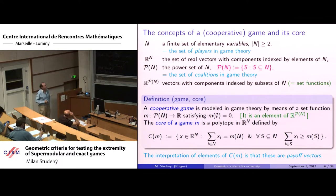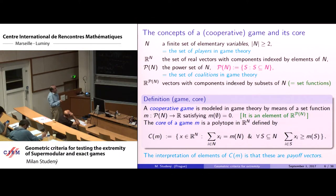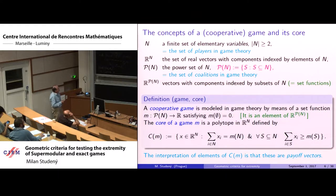N is a finite set of elementary variables corresponding to players in game theory. The notation R^N refers to real vectors indexed by N. The power set 2^N is the set of all subsets of N, and a subset of players is called a coalition in cooperative game theory. Set functions are vectors in the corresponding space.